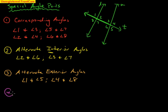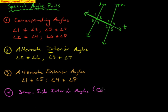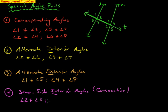Lastly, we have same-side interior angles — the book may also call them consecutive interior angles. Exterior means outside, interior means inside. Same-side interior angles are between the lines and on the same side of the transversal. So we're looking at angles two and three, and angles six and seven.